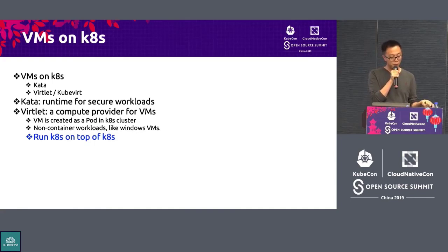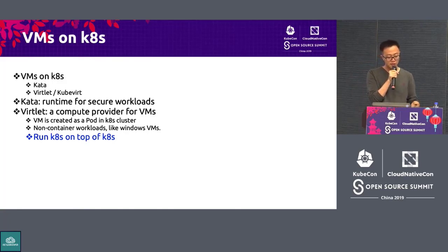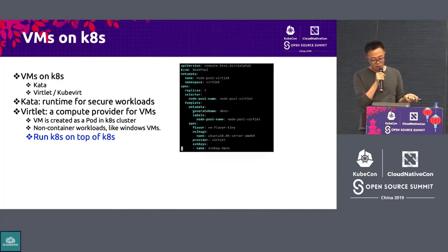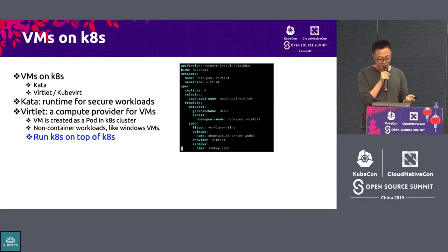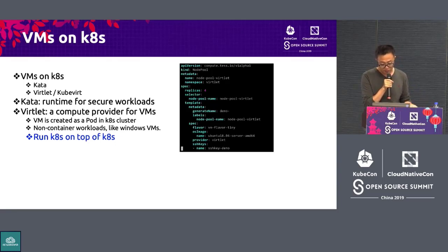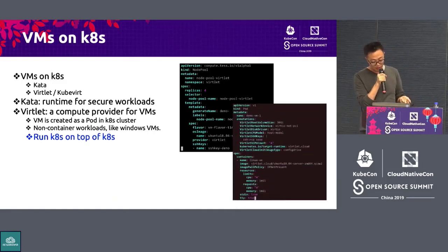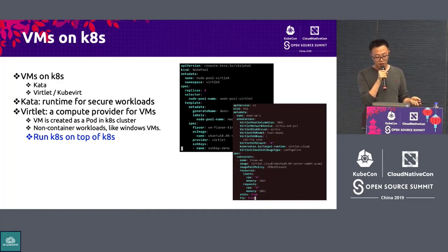This is a node pool spec for Virtlet. You can see the difference from a bare metal compute node — it's much shorter and doesn't have all the flavor bits. All it has is the VM flavor from our Kubernetes clusters, plus the provider set to Virtlet along with other bits like SSH keys. It creates a pod in the Kubernetes cluster, and that pod creates a virtual machine for us. We worked on areas like config drive and cloud-init, and eventually we can get virtual machines from Kubernetes.